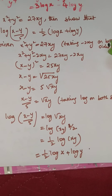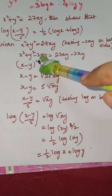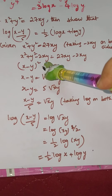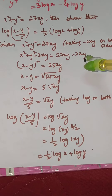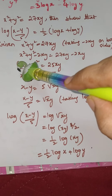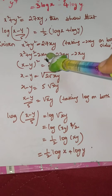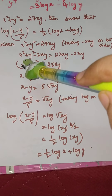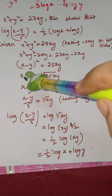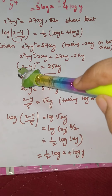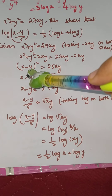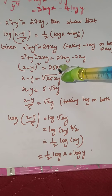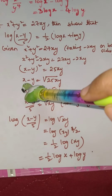We subtract 2xy from both sides: x² + y² − 2xy = 27xy − 2xy = 25xy. The left side is in the form (a−b)², so x² + y² − 2xy = (x−y)². Therefore (x−y)² = 25xy.